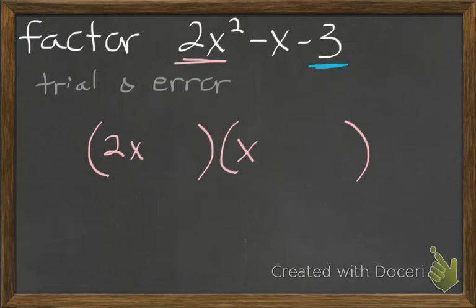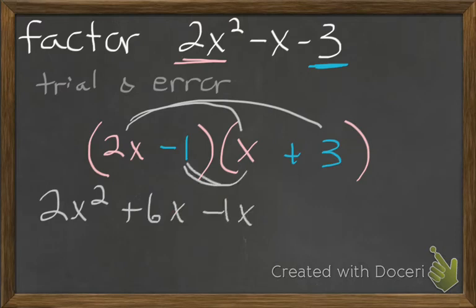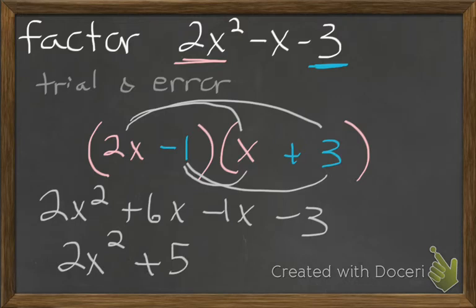So let's try a negative 1 and a positive 3. The way you check to see if it works is you're trying to figure out the FOIL. So 2x times x gives you the 2x squared. 2x times 3 gives you 6x. Negative 1 times x gives you negative x. Negative 1 times 3 gives you negative 3. And then when you simplify that, combining like terms, I will end up with a positive 5x minus 3. Looks like that didn't work.